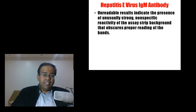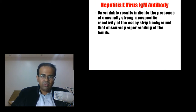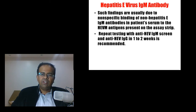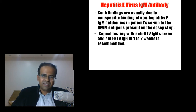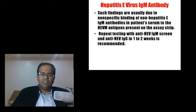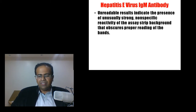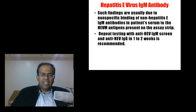Sometimes there are unreadable results also, which indicate the presence of unusually strong nonspecific reactivity of the assay strip background that obscures proper reading of the bands. Such findings are usually due to nonspecific binding of non-Hepatitis E IgM antibodies — some other antibodies in the patient's serum — to the HEV antigens present on the assay strip, causing unreadable results. Repeat testing with anti-HEV IgM screen and anti-HEV IgG in 1 to 2 weeks is recommended in such cases, as the picture might become clearer by then.